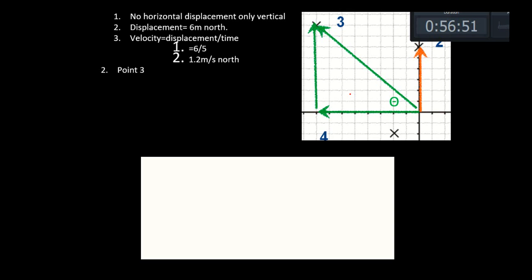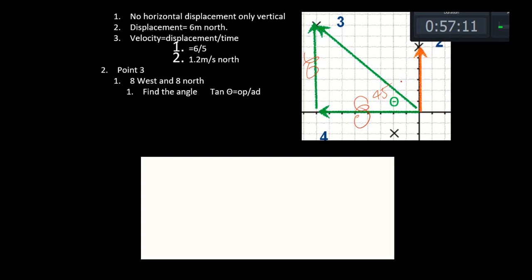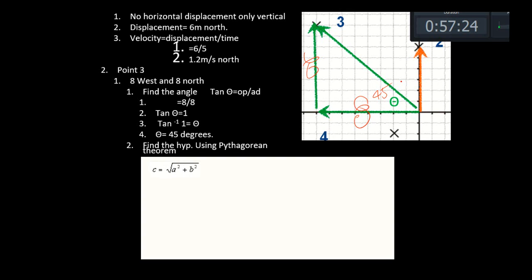Point three: eight west and eight north. If you add them up — eight and eight — the angle should be 45 degrees. Construction folks, you should know that. Finding the angle: tan is opposite over adjacent, which is 8 over 8, that gives 1, so the angle is 45 degrees. For the hypotenuse: eight squared plus eight squared is 64 plus 64, which is 128 — giving 11.3 meters.